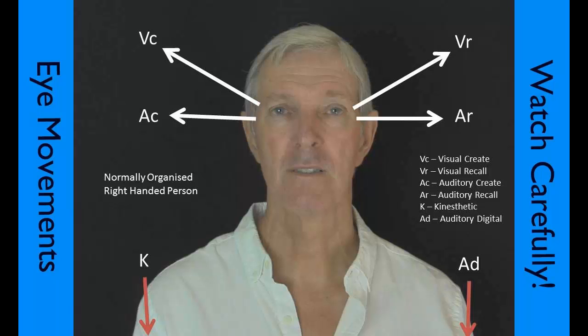When a person's eyes go down to the left, as you look at them, they are accessing their feelings. When a person's eyes go down to the right, as you look at them, they are listening to their own internal dialogue, their own self-talk. I hope you found that worthwhile.